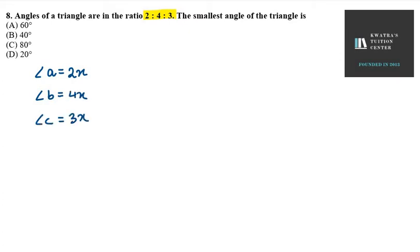Now, let's talk about the angles in a triangle. So, one angle is 2x, the other is 4x, the other is 3x. Now, the angle sum property is: sum of all the triangles angles, 2x plus 4x plus 3x equals 180 degrees.